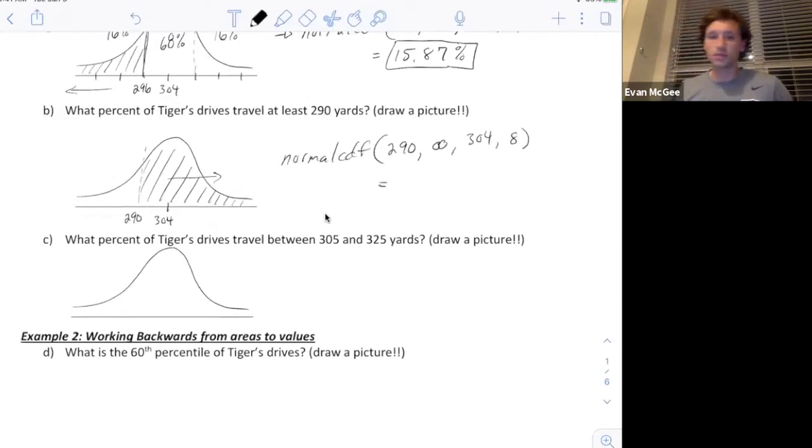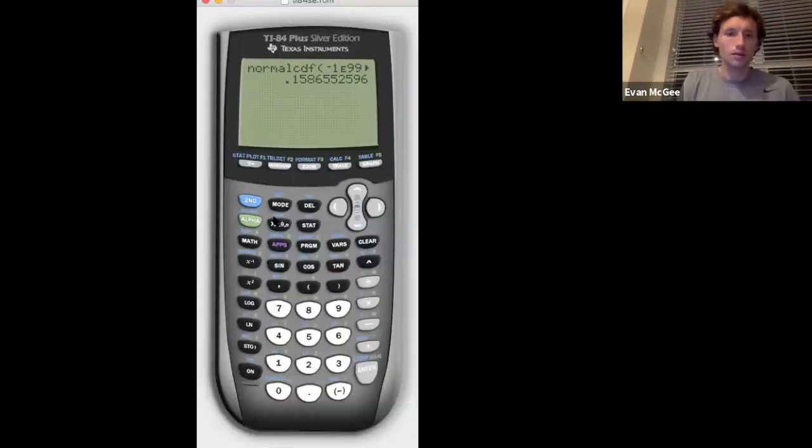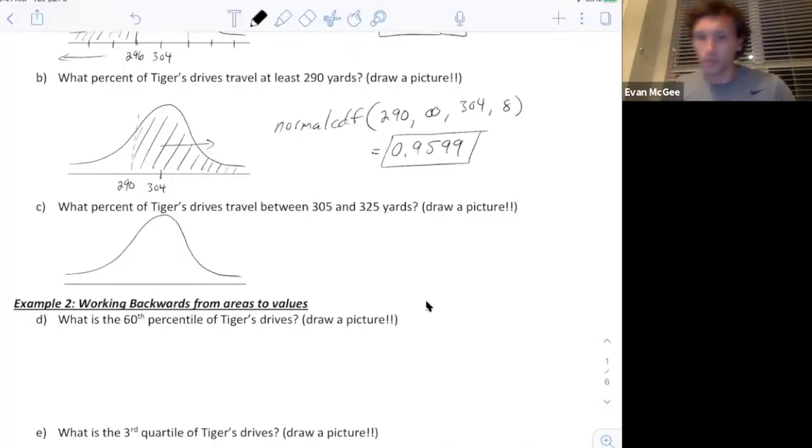I'll show you how to do one more time. I'm going to hit second vars, normal CDF. My lower bound was 290 this time, going to positive infinity. I'll just hit a couple of nines in there. The mean is 304, standard deviation 8. 96% or 95.99%. So 95.99% of his drives will travel at least 290 yards.